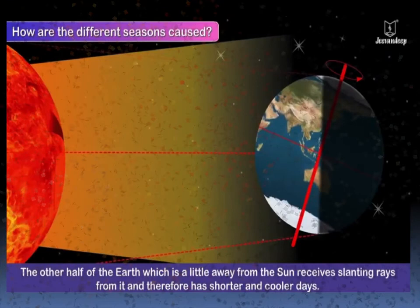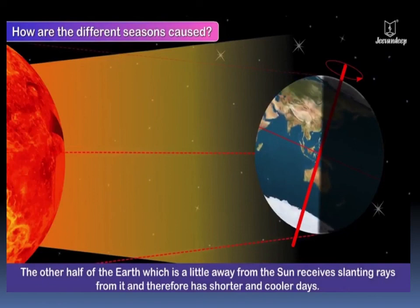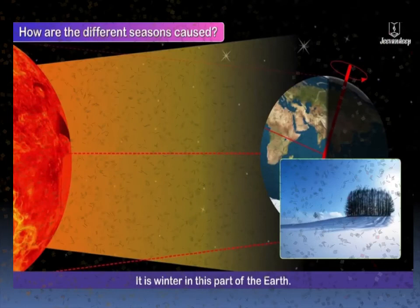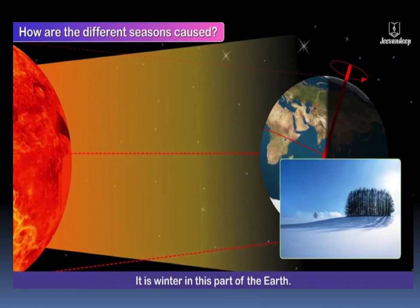The other half of the earth, which is a little away from the sun, receives slanting rays from it and therefore has shorter and cooler days. It is winter in this part of the earth.